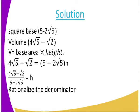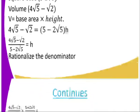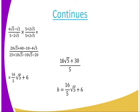The square base is five minus two root five. The volume is four root five minus thirty-two. Volume equals base area times height, as given. From there, we divide both sides by the base area. So we rationalize the denominator. Remember, my denominator has a negative sign, so whatever I multiply with should have a positive sign. That is what I am expecting to have.